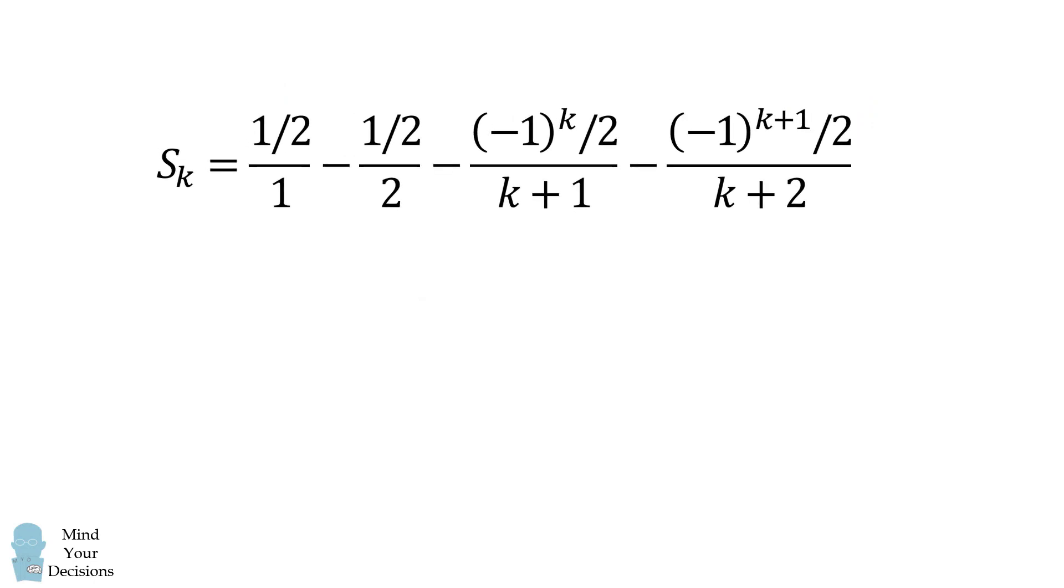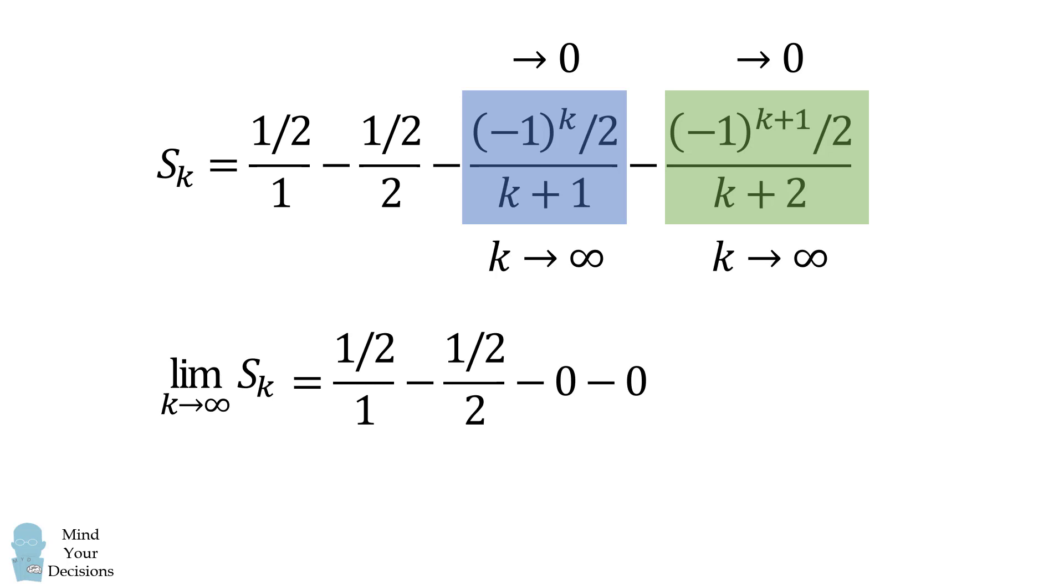From here, let's consider the behavior as k goes to infinity. In this term, as k goes to infinity, the denominator will get larger and larger, so the term will eventually go to zero. The same thing is true for this term here. As k goes to infinity, this term will go to zero. So the limit as k goes to infinity of this sum will be equal to 1 half over 1 minus 1 half over 2 minus 0 minus 0.